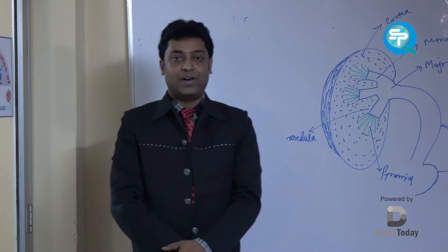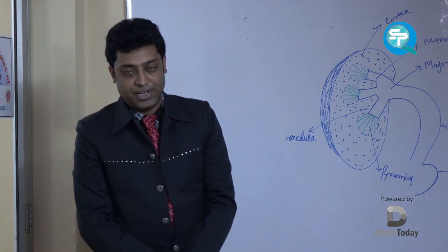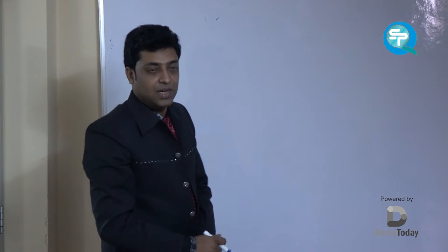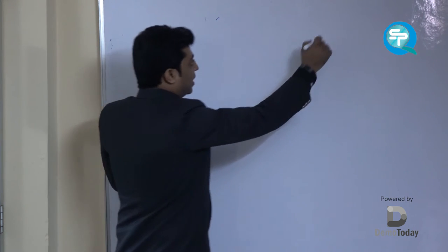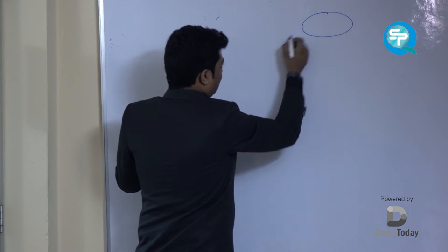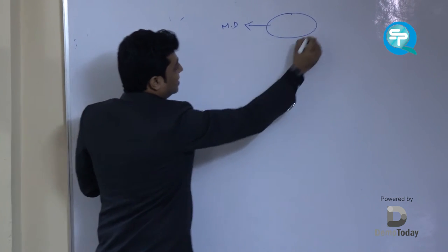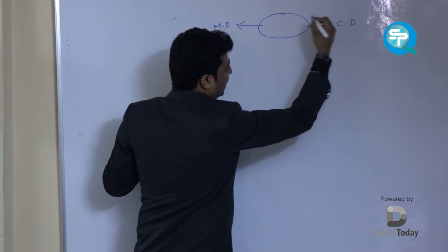Now I am going to explain regarding the digestive system. In human body, we have two types of digestion. One is known as mechanical digestion and the second one is known as chemical digestion.